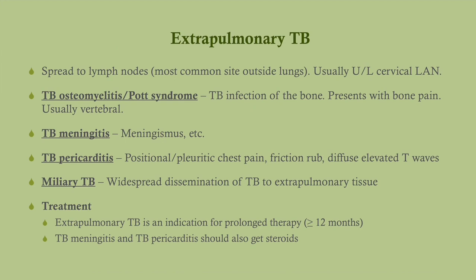Extrapulmonary findings: the most common extrapulmonary site is the lymph nodes. You're going to see hilar lymphadenopathy in a lot of them, but sometimes it can spread to the cervical lymph nodes, causing unilateral cervical lymphadenopathy. You can see osteomyelitis, also called Pott's syndrome — this often goes to the vertebrae, and the primary manifestation is bone pain. TB meningitis presents with meningitis symptoms and meningismus. TB pericarditis presents with pericarditis symptoms. Miliary TB is widespread disseminated TB. For any extrapulmonary TB manifestation, you do a longer course of therapy. TB meningitis and pericarditis should also get steroids.